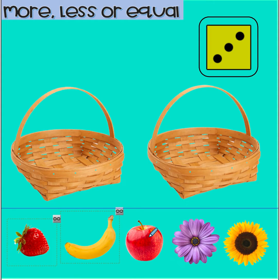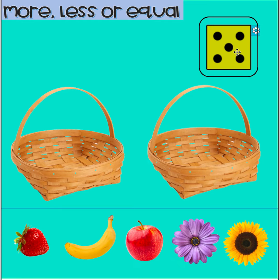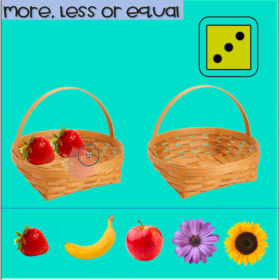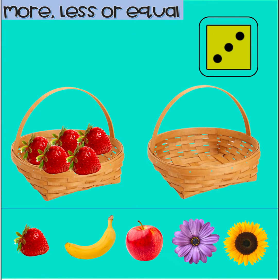Now let's try to compare the strawberry and the apple. We're going to put strawberries in this basket and the apples in this other basket. Are you ready? Okay, let's roll the dice. Five! What number is it? Five. Great job! So five strawberries in this basket. Count with me: one, two, three, four, five. Five strawberries.